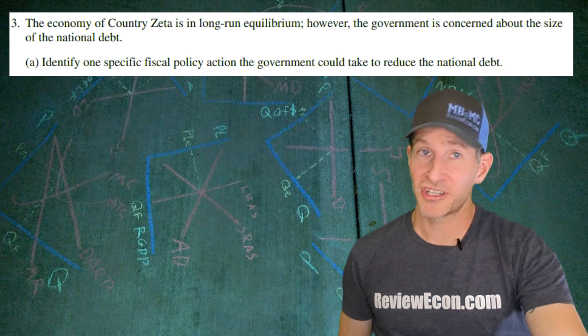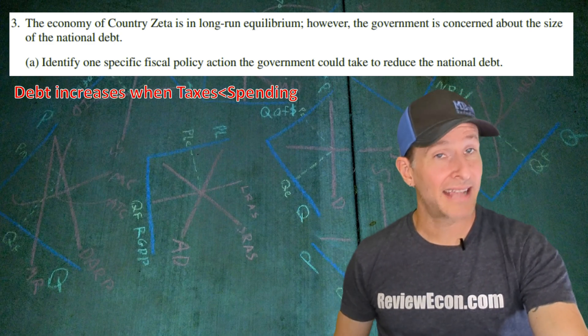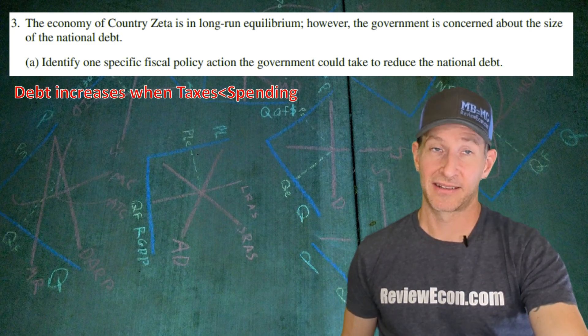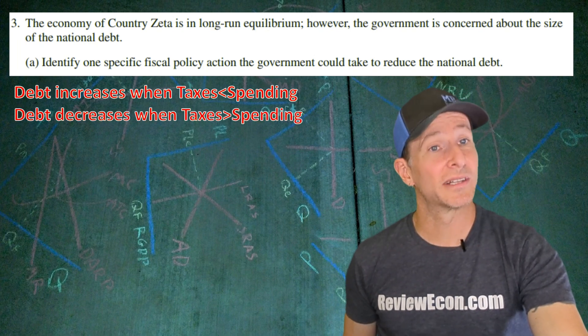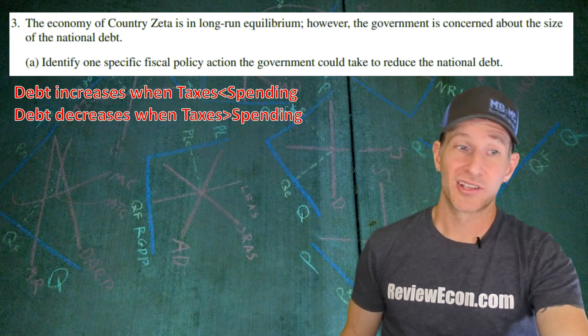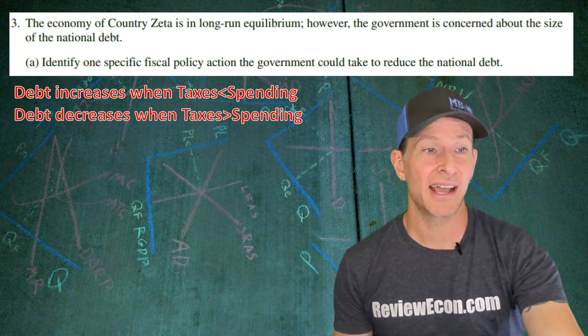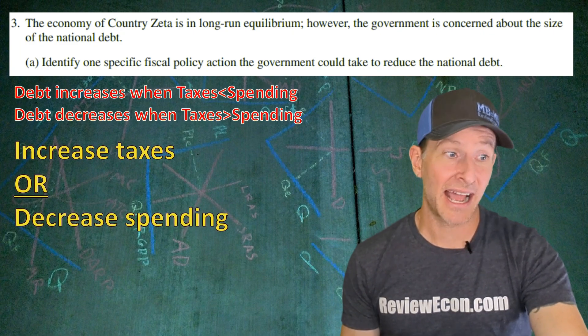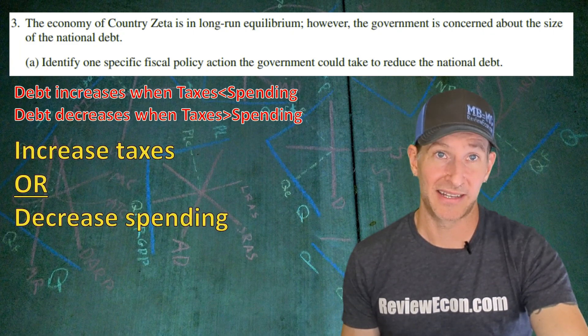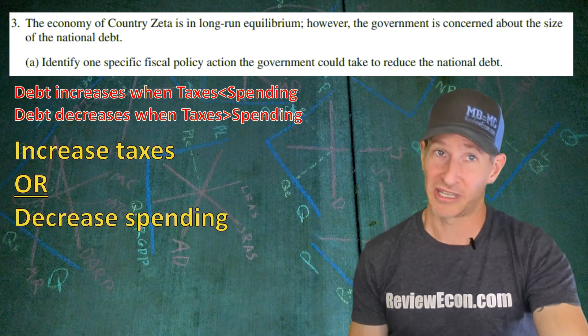In order to answer this question, we need to remember that the national debt will increase when taxes are less than government spending, and the national debt will decrease when taxes are greater than government spending. So if we want to decrease the national debt, the government can increase taxes or decrease spending. Either one of those answers will get you the point.